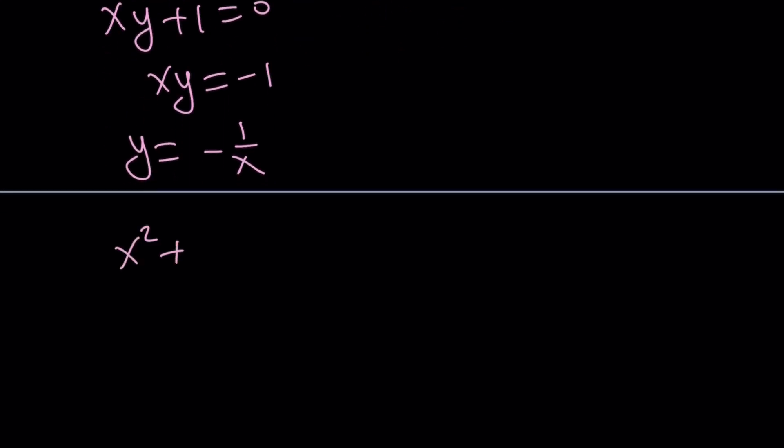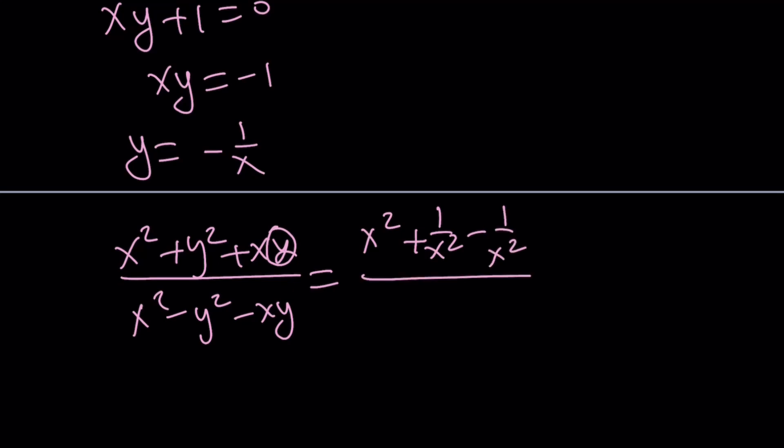x squared plus y squared plus xy divided by x squared minus y squared minus xy. Let's go ahead and replace y with negative 1 over x. x squared plus 1 over x squared. If you replace y with negative 1 over x, you're going to get minus 1 over x squared, and here x squared minus 1 over x squared plus, because this is going to become a negative, so double negation is going to give us the following.